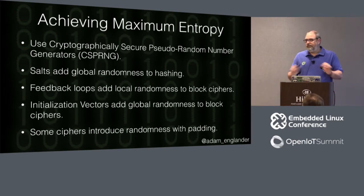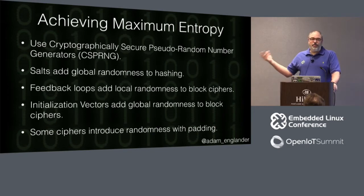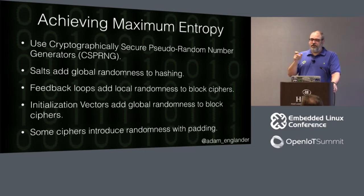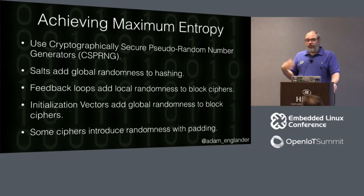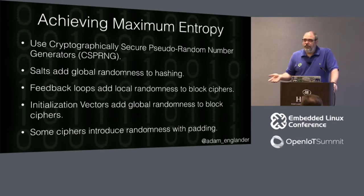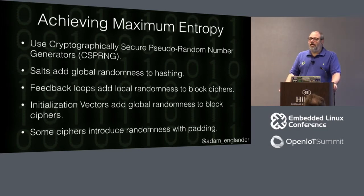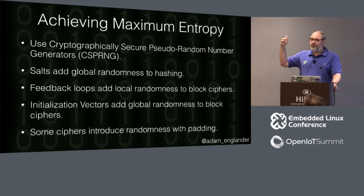Salts should be generated using a cryptographically secure random number generator. Feedback loops create local randomness in block ciphers: you take the value from one response and put it into the encryption of the next, so even if you've got the same value, it doesn't come out the same twice. Salts for hashing ensure that if you hash a password twice with two different salts, it's not the same value. Security researchers and hackers all know what the top 100 passwords are, and if you don't use a random salt, they can determine which ones are using those top 100 passwords just based on the hash values.